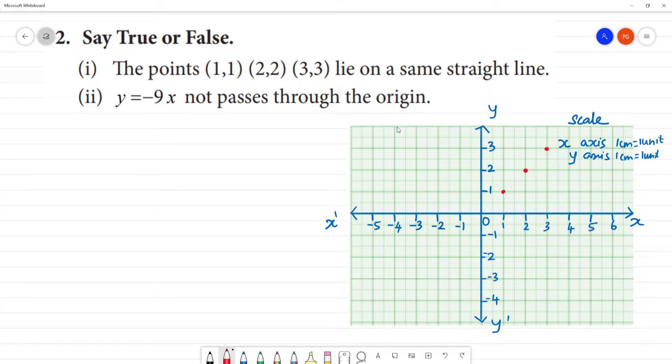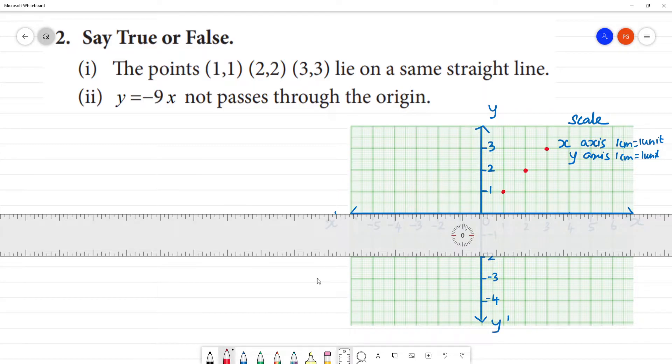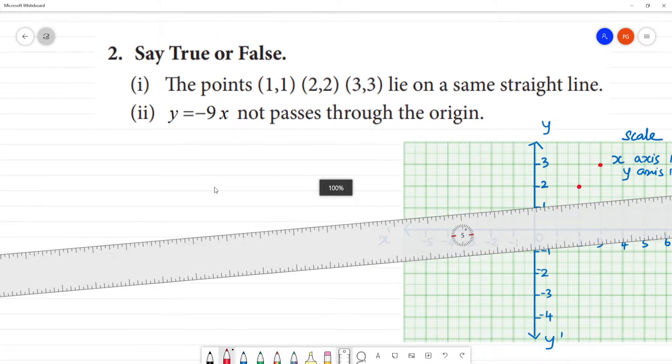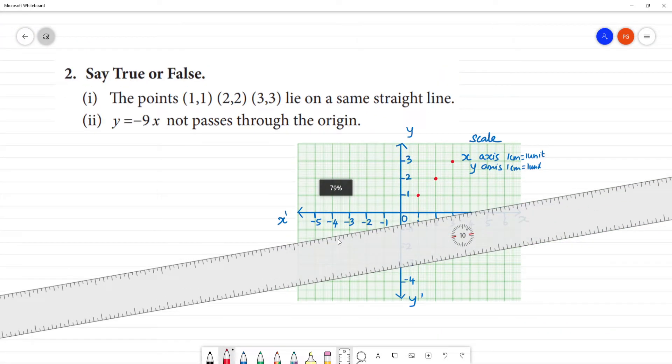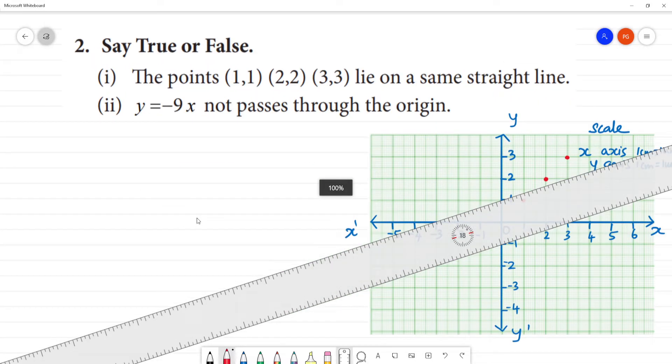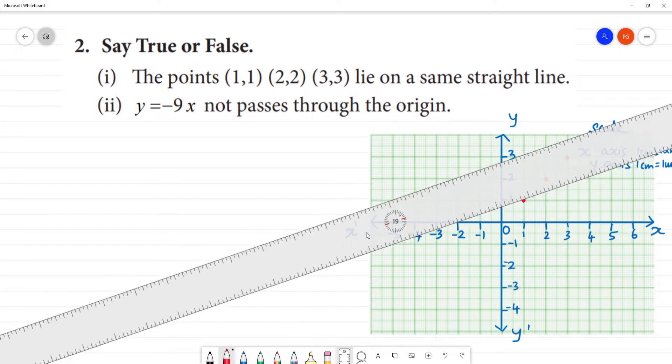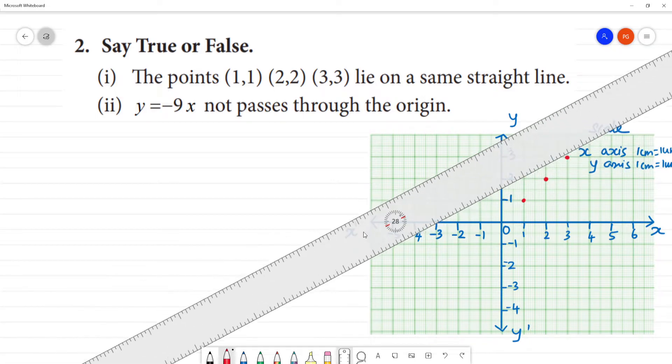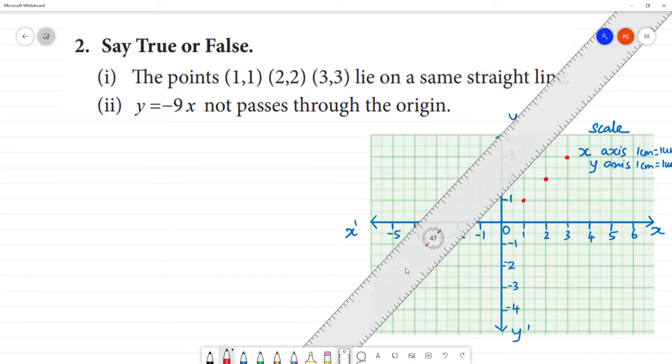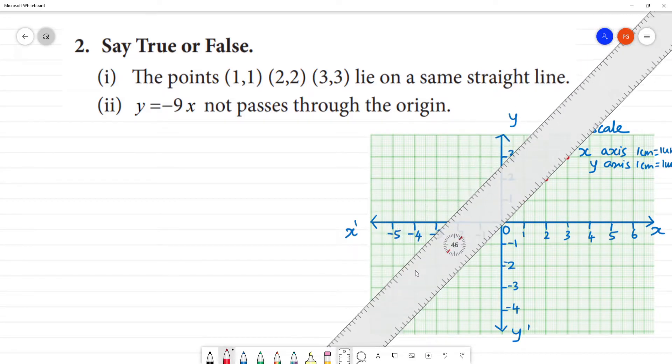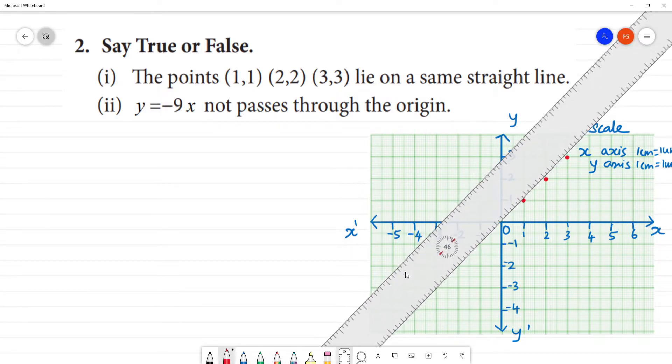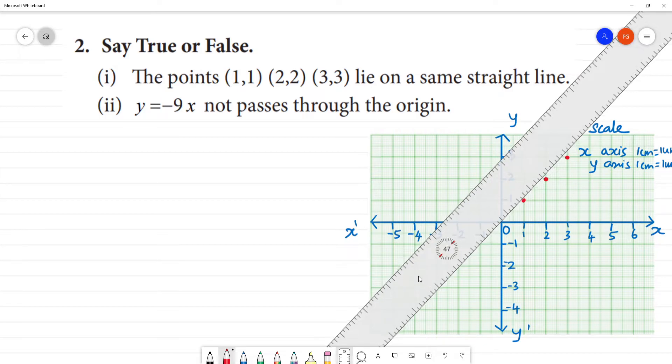So, they lie on the same straight line. If we look at them, this is a straight line. Right? This is a straight line.